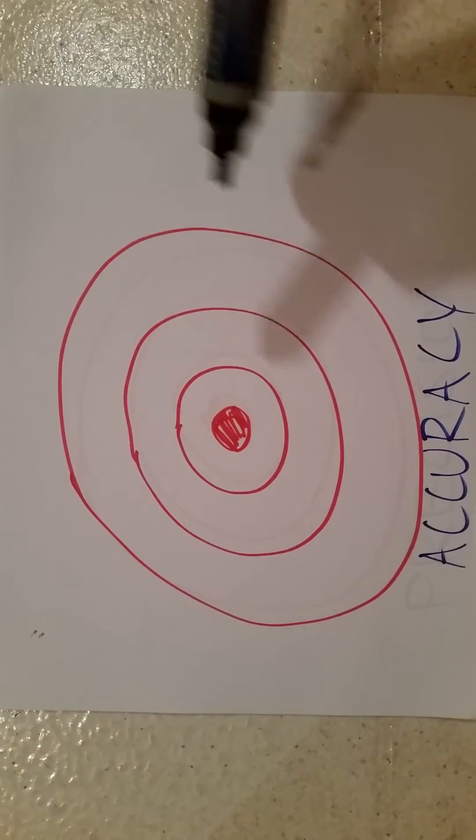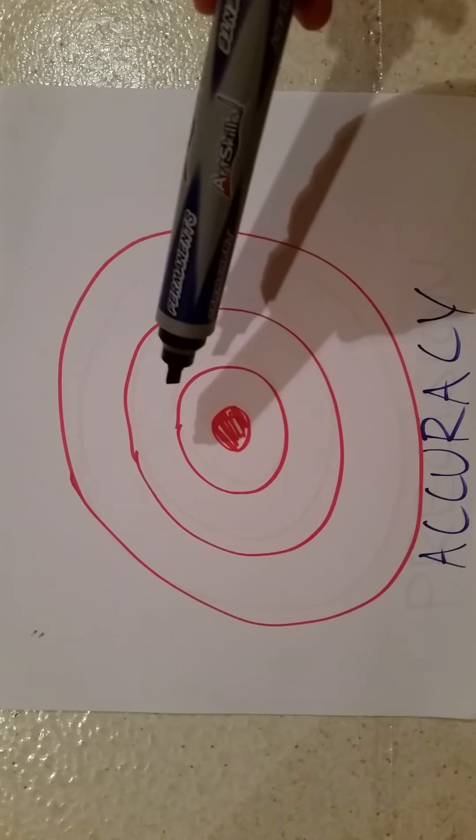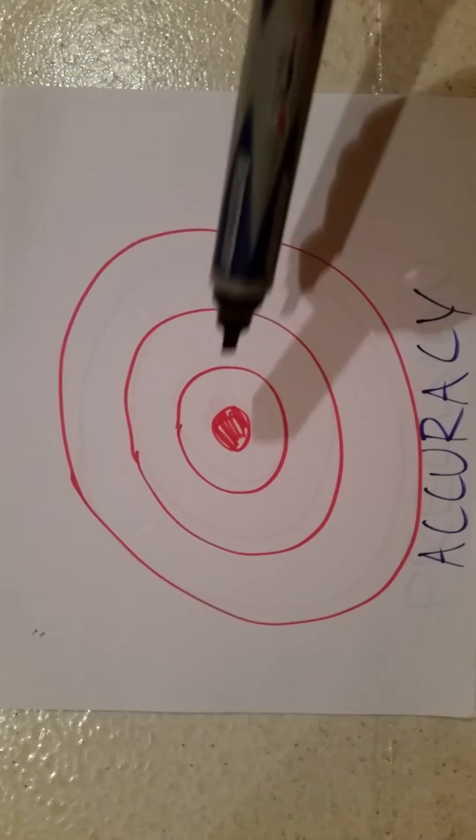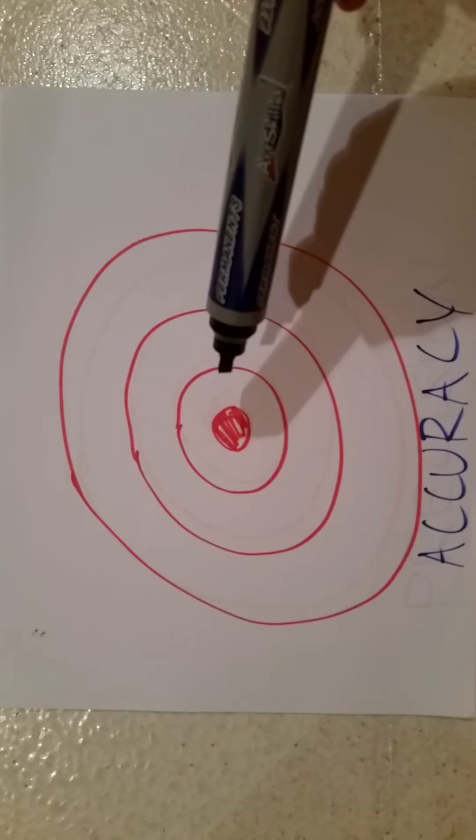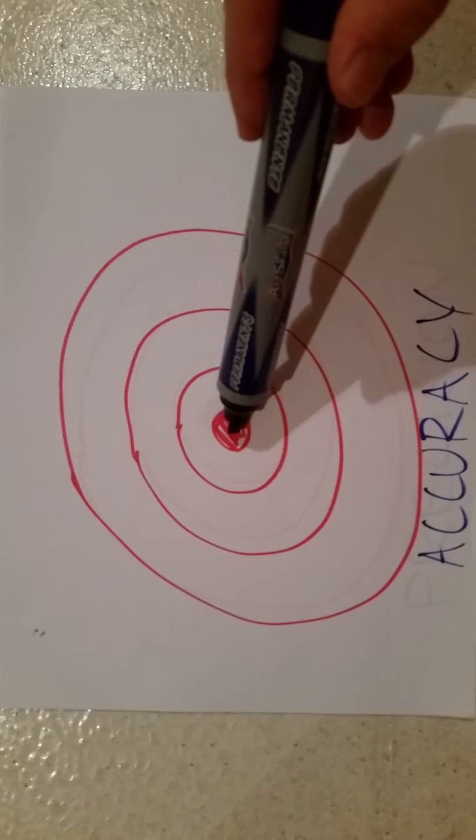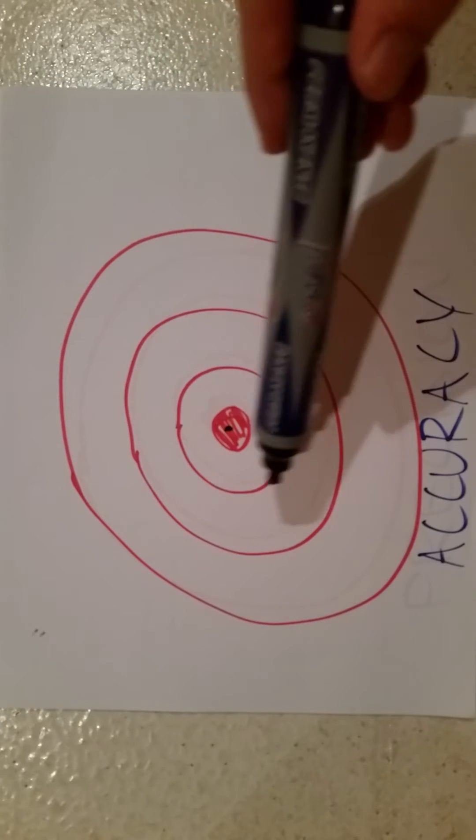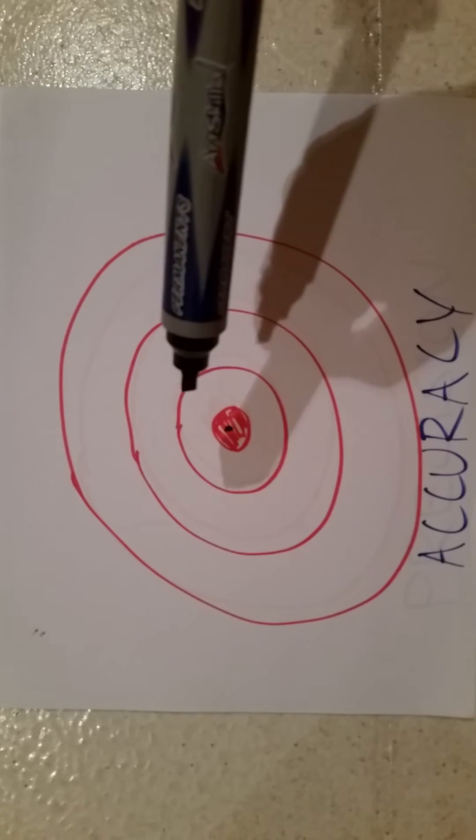Accuracy is about how close we can get to the true target. So for this example, I'm going to use a bullseye here. Let's say we're shooting arrows at this bullseye. Now accuracy would be how close we can get to this point, not necessarily how close our succeeding ones get, rather how close we get to this point.